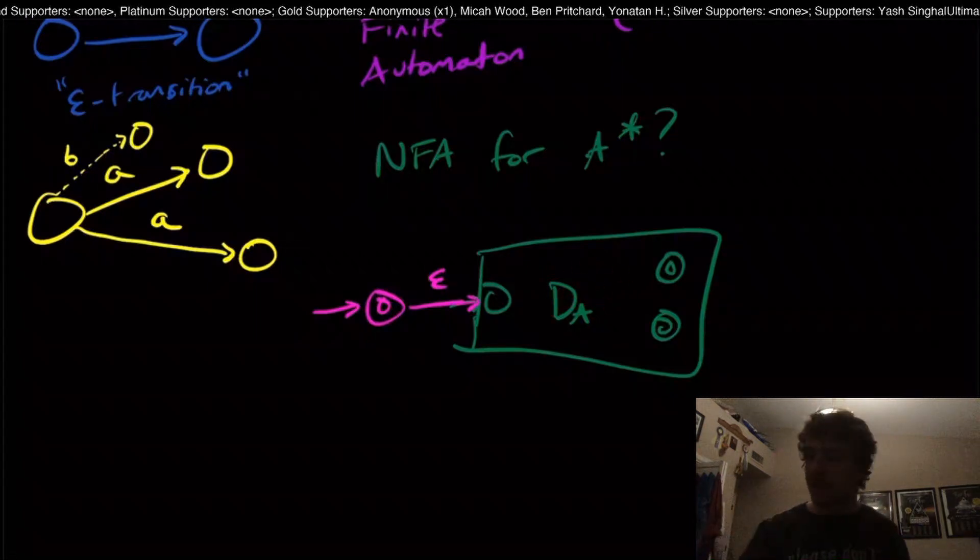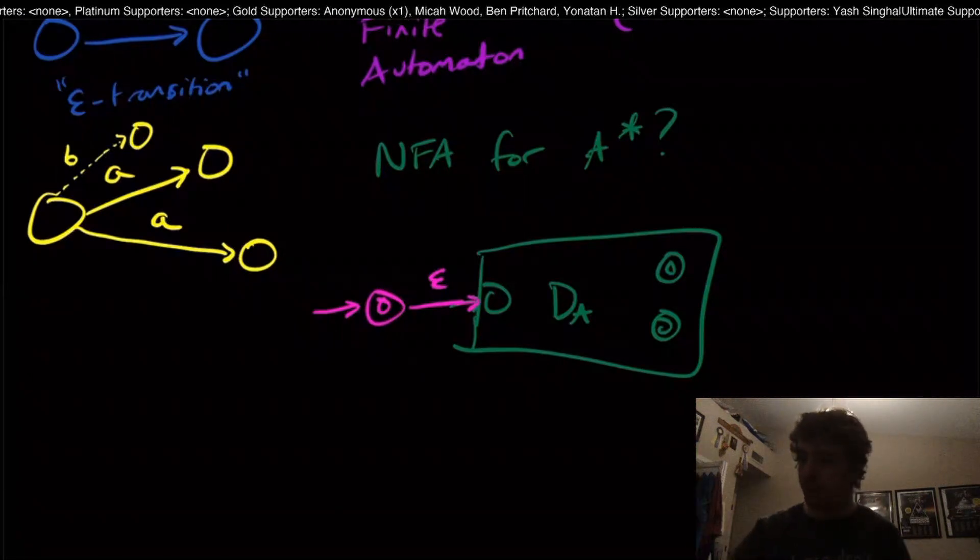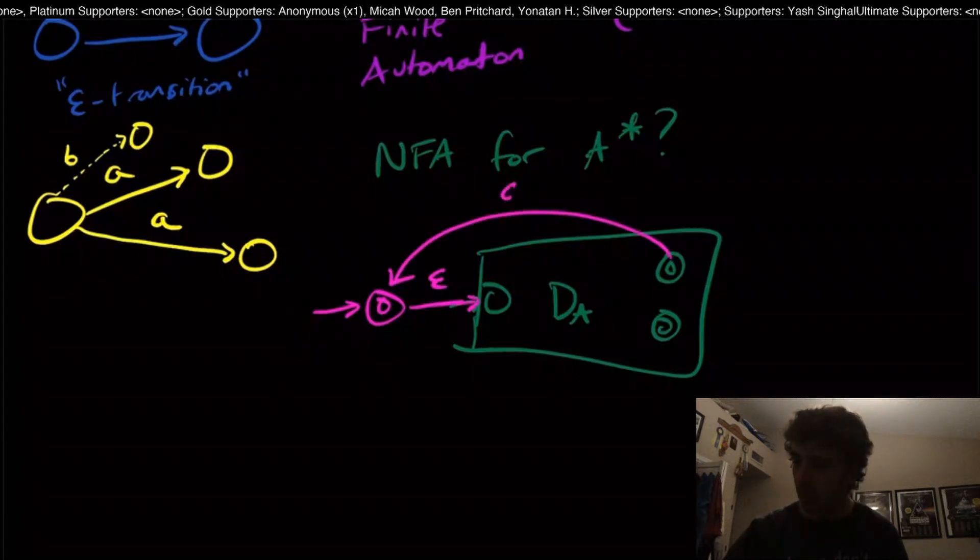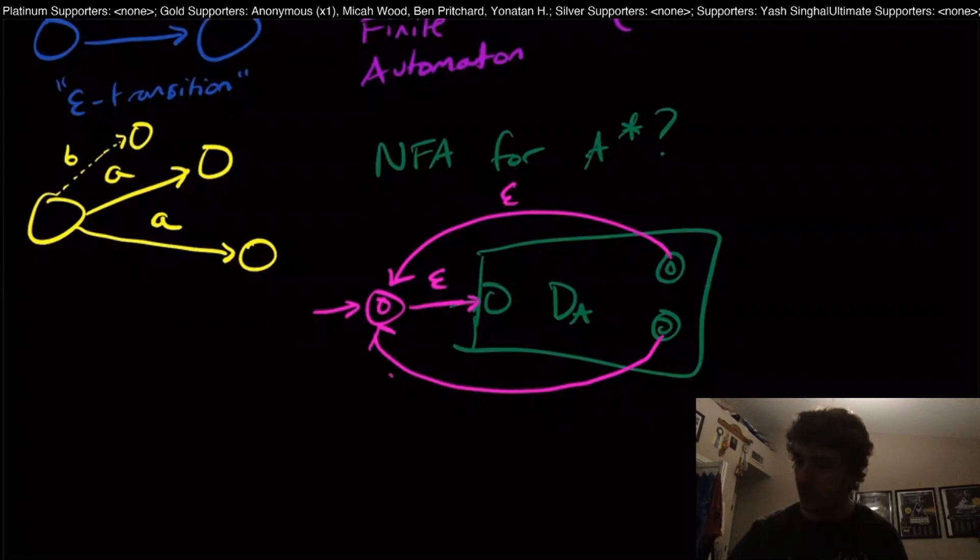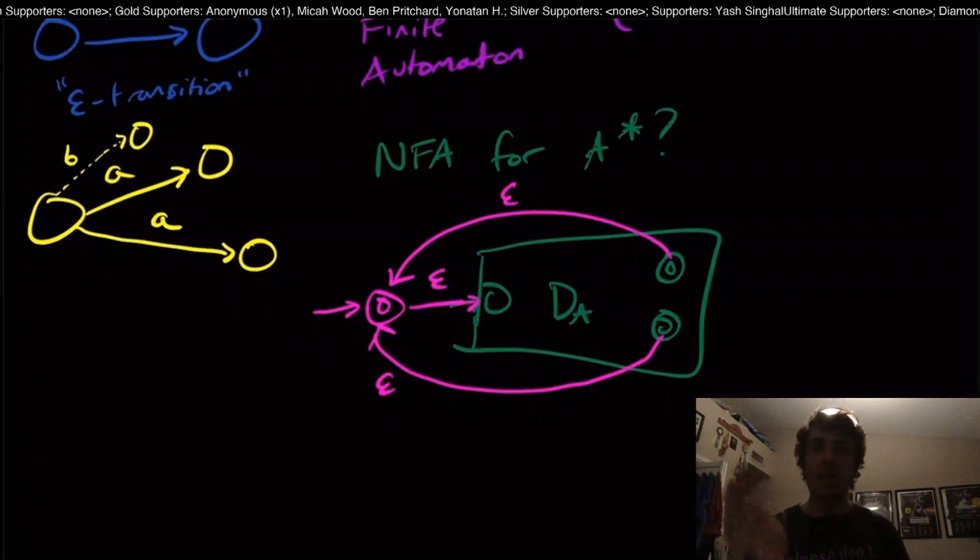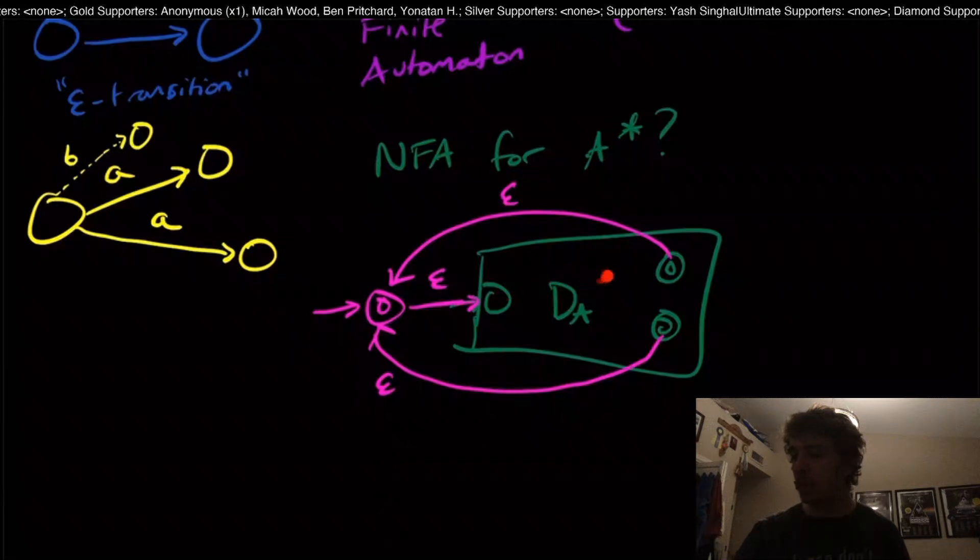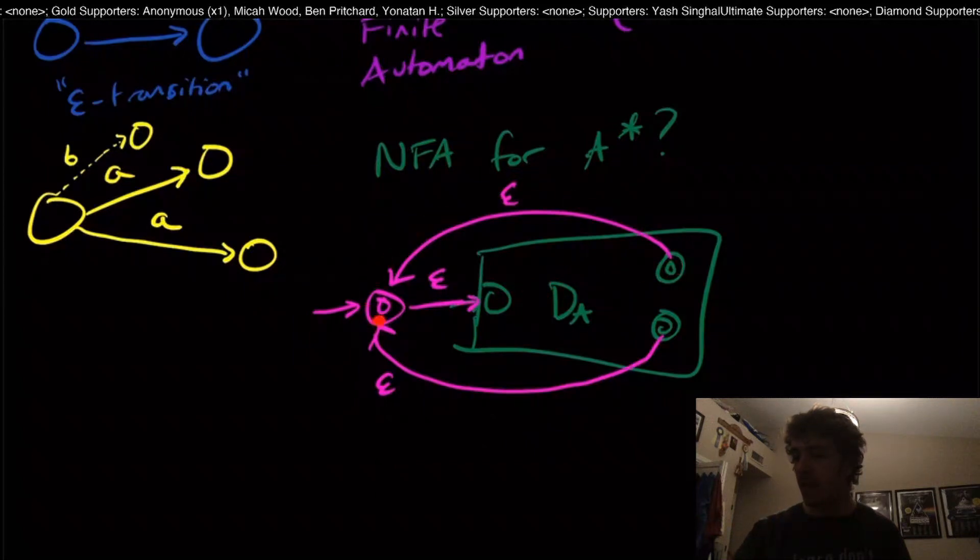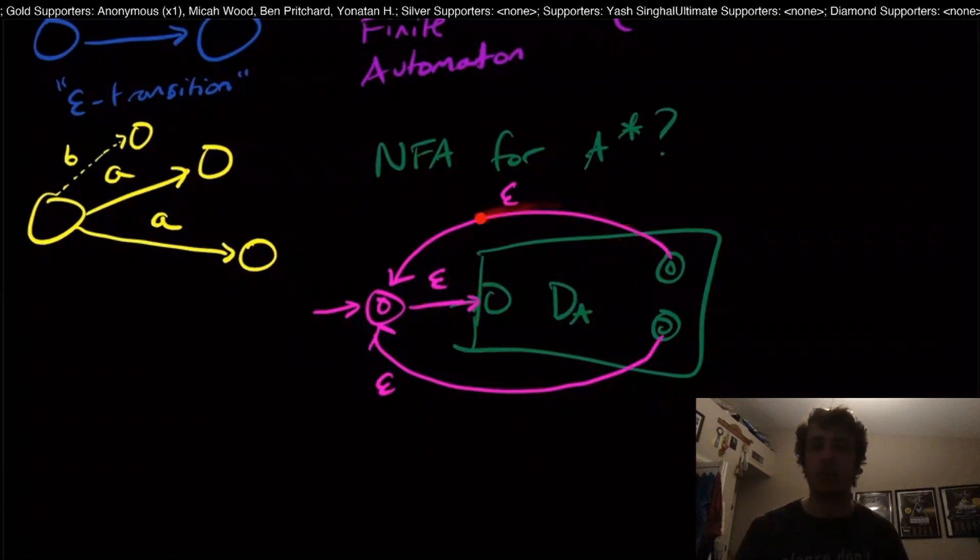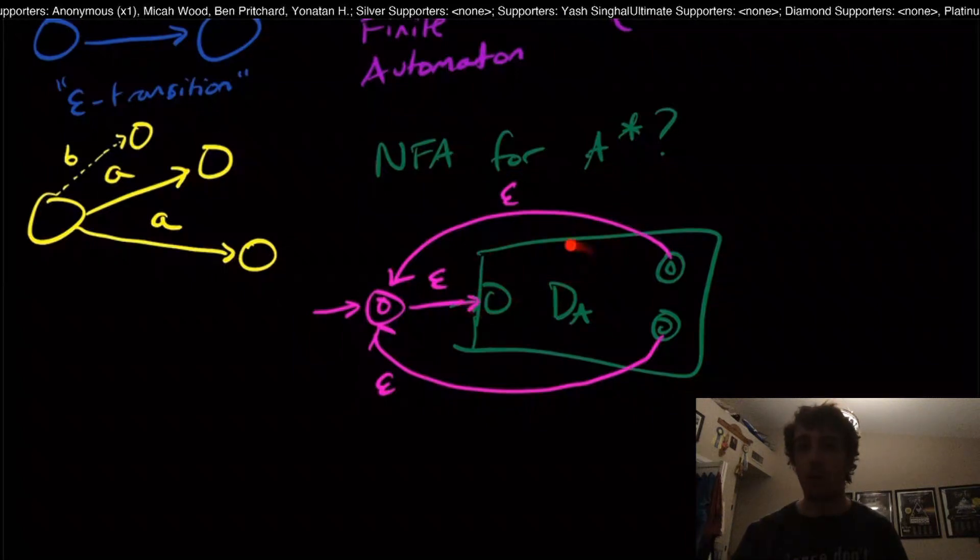Because we have star here, we need to be able to go back through the machine as many times as we want. So we can actually do something like this where we have epsilon transitions from the final states here. Star just means a whole bunch of concatenations where each of the strings is in the language A. That means we read a string from A and then optionally go through the machine again and again as many times as our heart desires. So this is an NFA for A star.